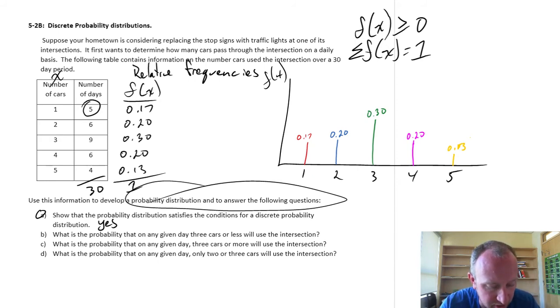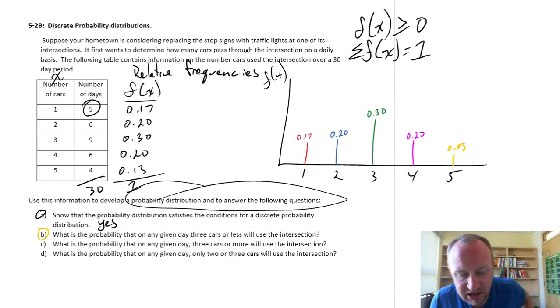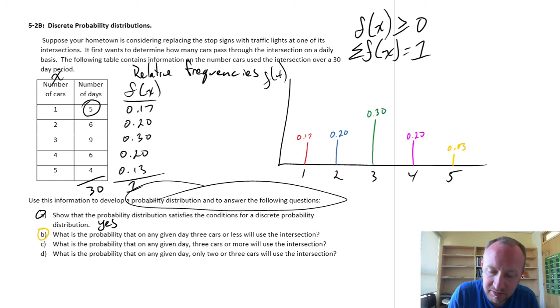So, let's go ahead and look at the next part of these problems. Part B, what is the probability that on any given day, three cars or less will use the intersection? So, in fact, using the graphical display, I can see, well, that probability, three cars or less,